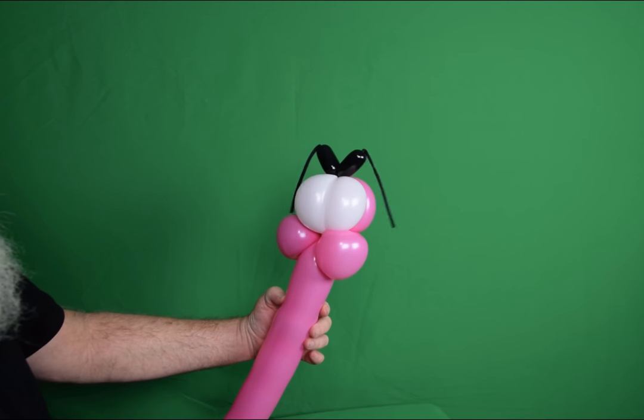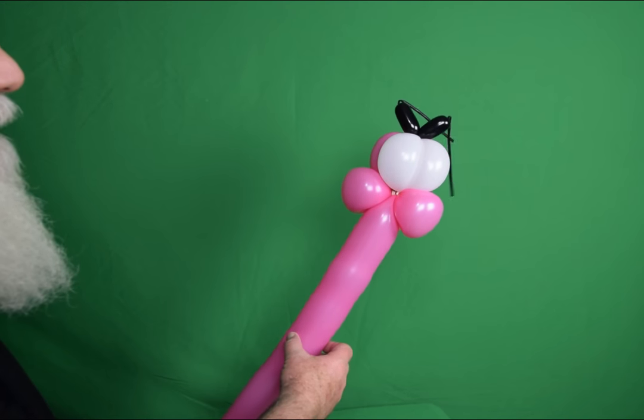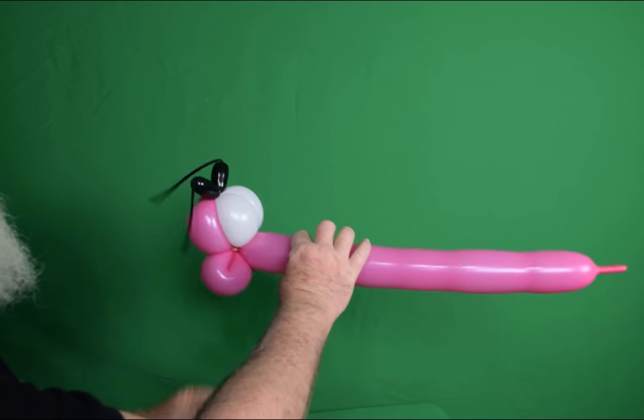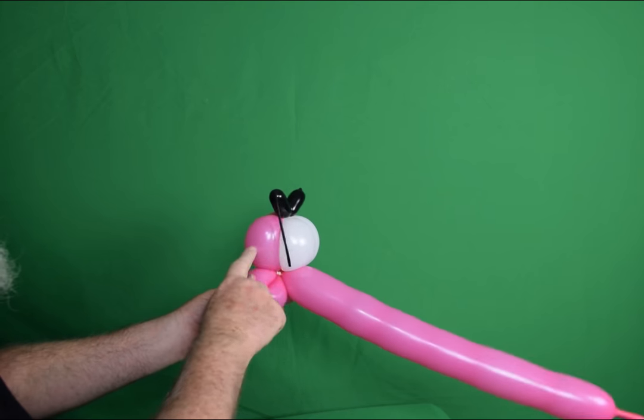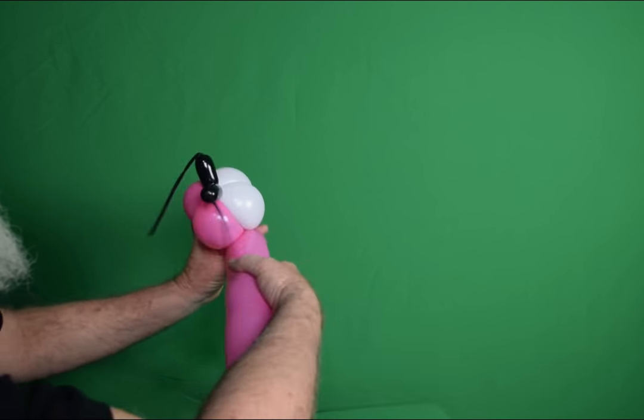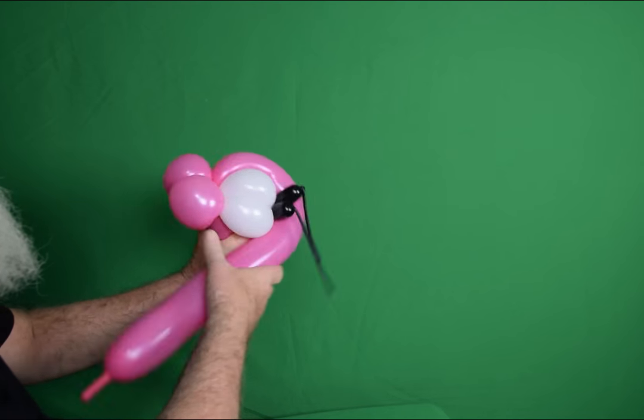Sort of an alien bug looking thing. But we're not done yet obviously. So now we're going to take the remainder of our 360. We're going to wrap up over. These here are going along the side here. This is going to make obviously our eyes.